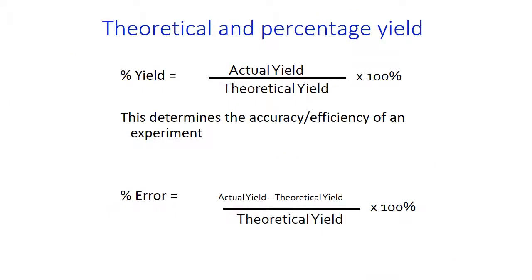The first thing I want to look at is theoretical and percentage yield. Percentage yield is the actual yield — what you get from the experiment — divided by the theoretical yield, which is what you calculate from the molar calculations, times 100. This will determine how effective your experiment was, whether you've lost material, and whether you need to improve the experiment, how efficient it is, how you've used the reactants to make the product.